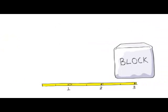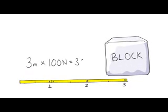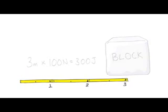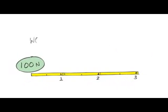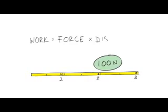Here's a block. All we need to do is multiply the distance by the force. So 3 metres times 100 newtons equals 300 joules of work. When you move a force over a distance, then you have done work.